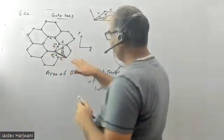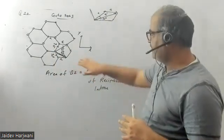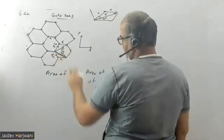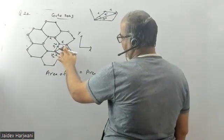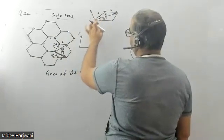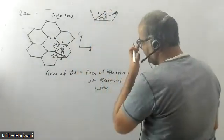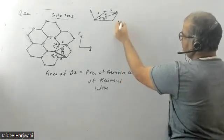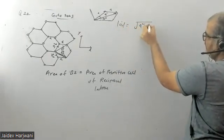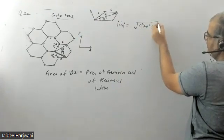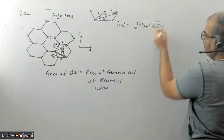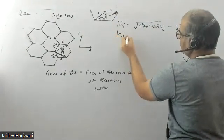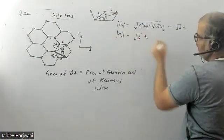First of all we have to write the primitive lattice vectors of this direct lattice. We can see a1' and a2' are actually the primitive lattice vectors. If I calculate the magnitude of a1', this will be the sum of these two vectors. The magnitude of a1' equals a² + a² + 2a² cos60° (which is 1/2), giving us √3a. Similarly, the magnitude of a2' is also equal to √3a.